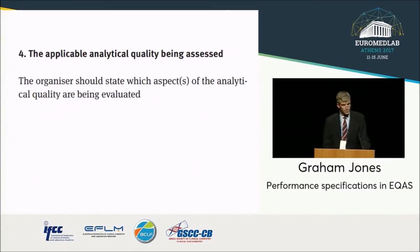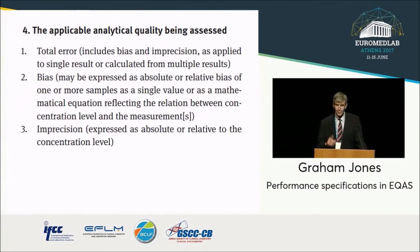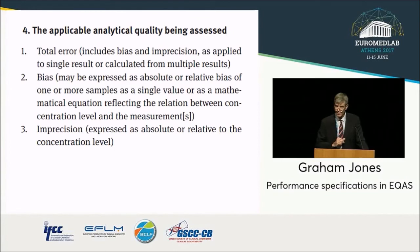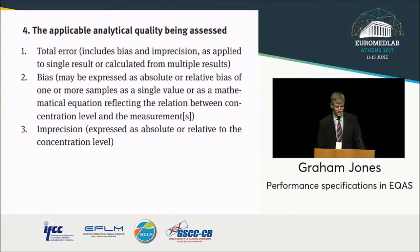The fourth element is the analytical quality property being assessed. If it's a single sample, it must be total error — all of those things are combined. If you're assessing bias, that must be determined from an assessment of multiple samples and taking an average, and a bias specification is likely to be different to a total error specification. Similarly, a specification for precision is likely to be different to both of the above.